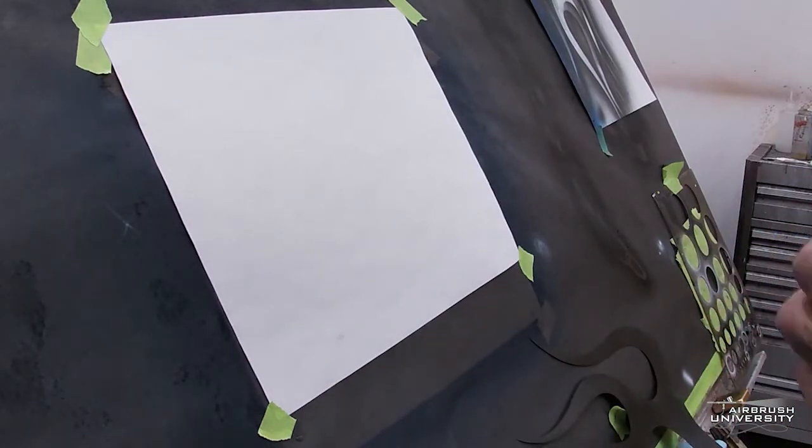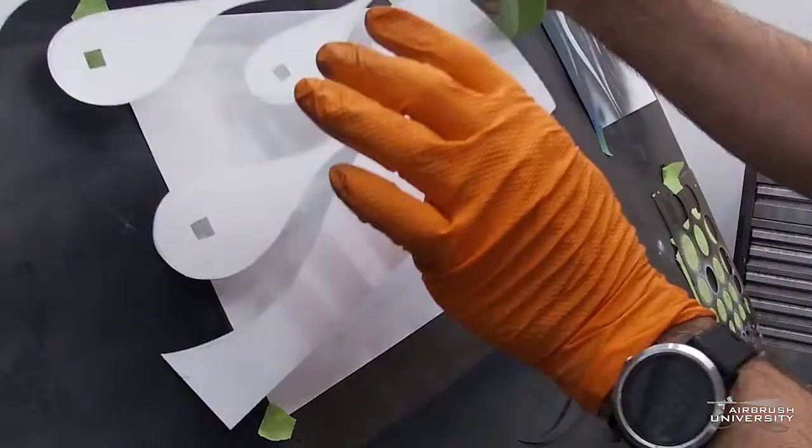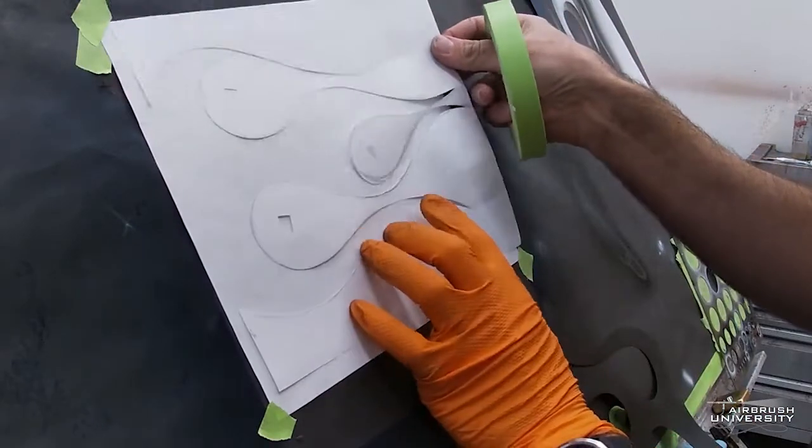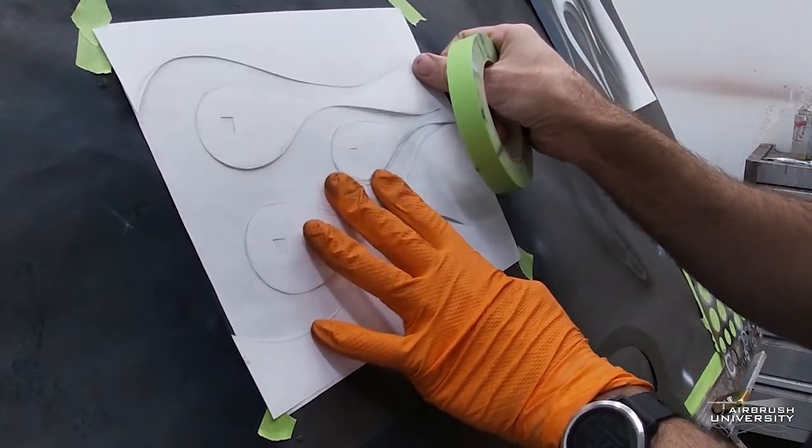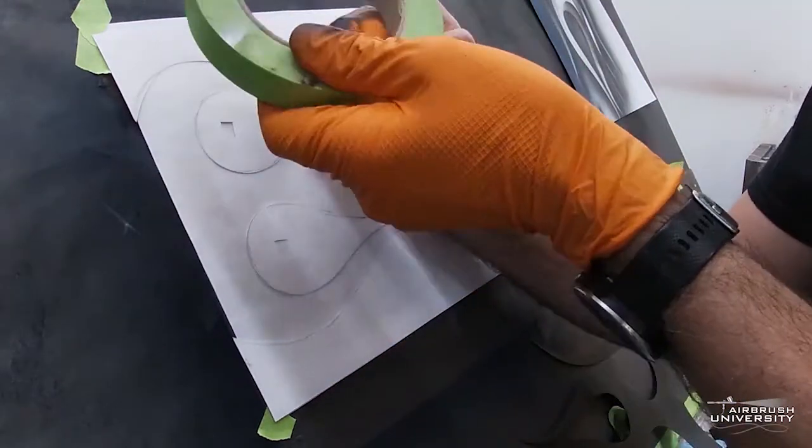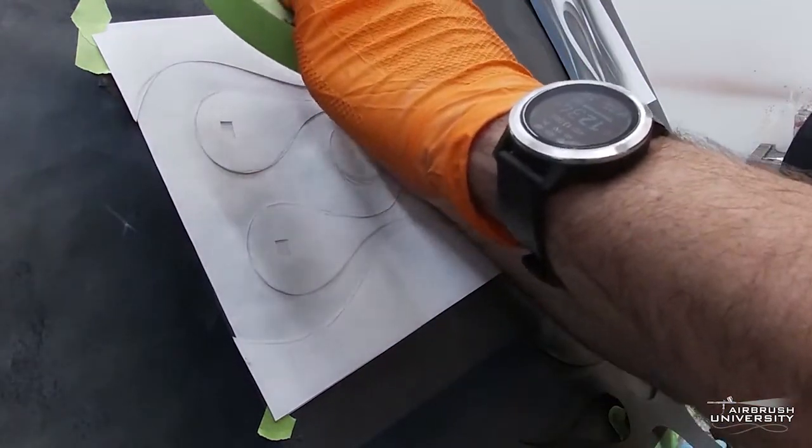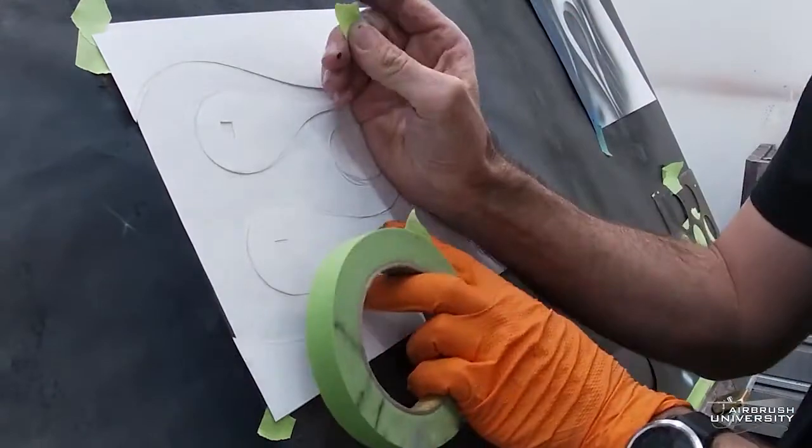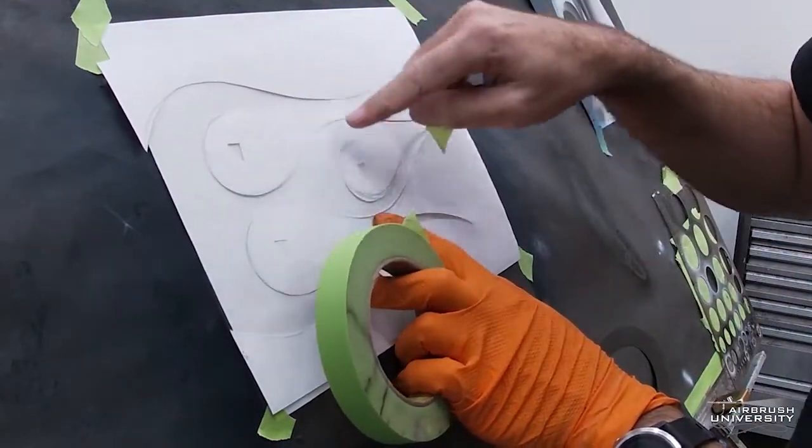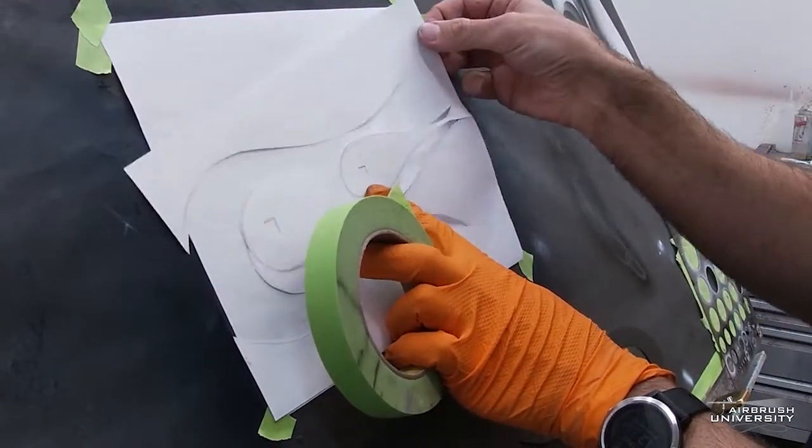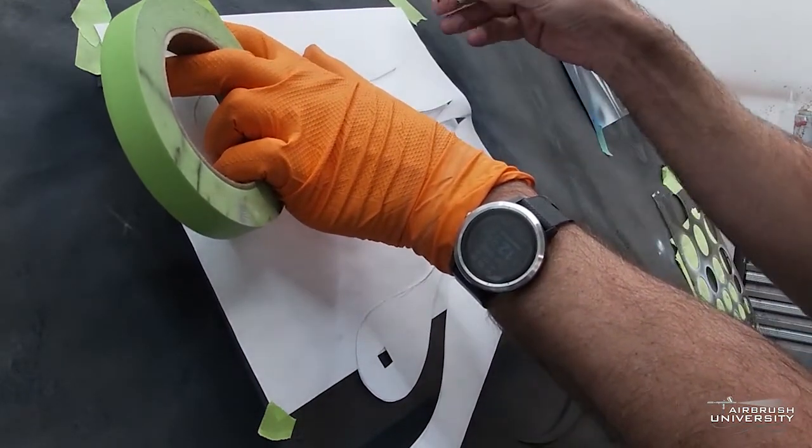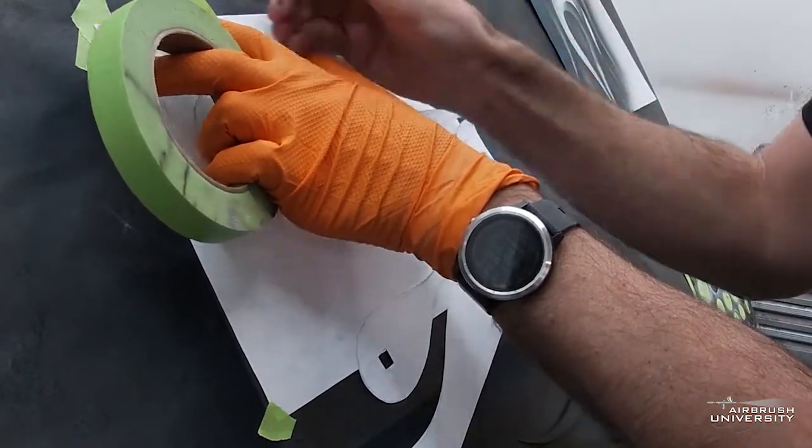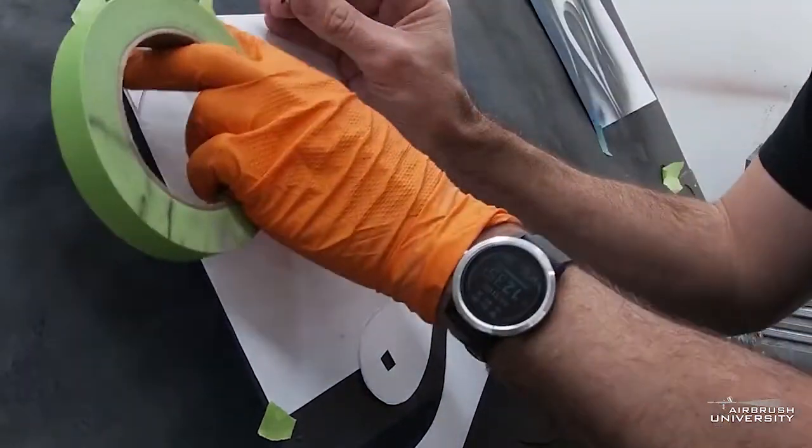You're going to take the outside of the flames that you cut from and I would recommend cutting in some little squares or rectangle shapes right there. And then let's go ahead and tape this perfectly on top of the other piece of paper that you're going to airbrush on, or whatever you're going to airbrush on.